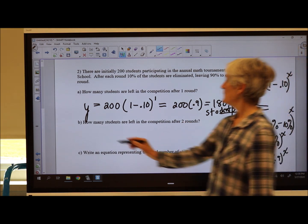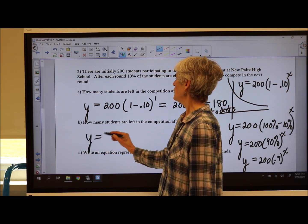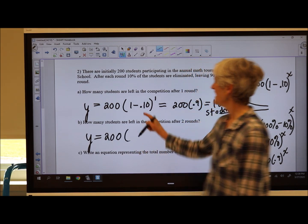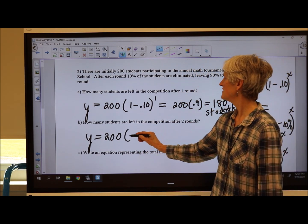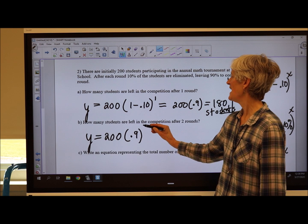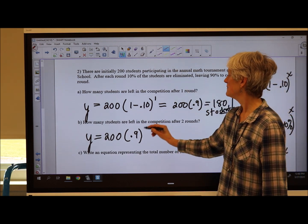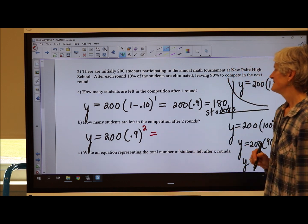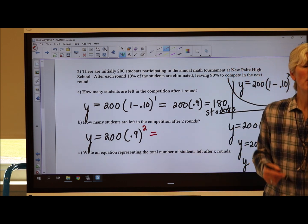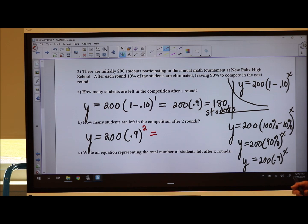How many students are left in the competition after 2 rounds? Now that I have my model, I can write it like this or like this. I'll just write 0.9 to the x. I'm going to put a 2 in where the x is. So that's 200 times 0.9 times 0.9 again.